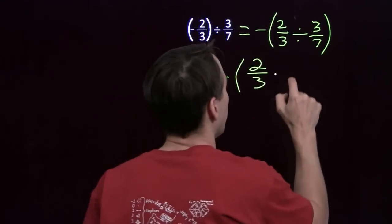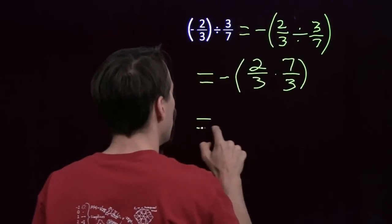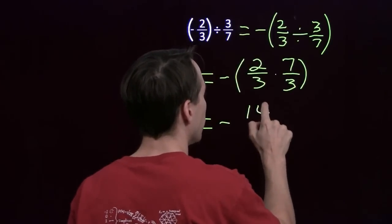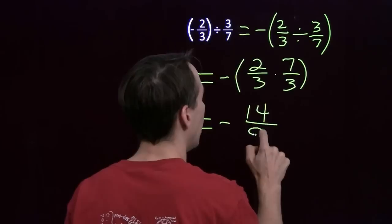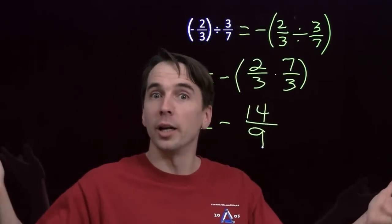Reciprocal of a fraction, you just flip it over, times 7/3. And we know how to multiply fractions. You multiply the 2 and the 7, you get 14. You multiply the 3 and the 3 in the denominator, you get 9. And our answer is negative 14/9. And we're done.